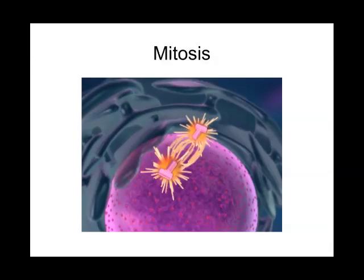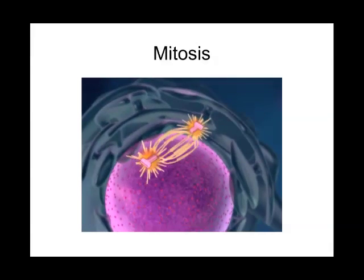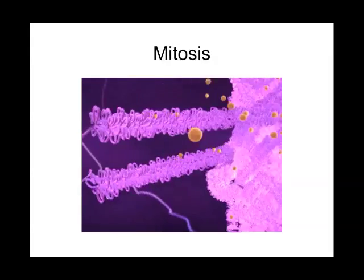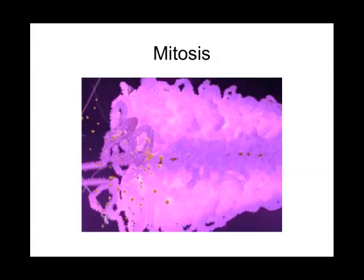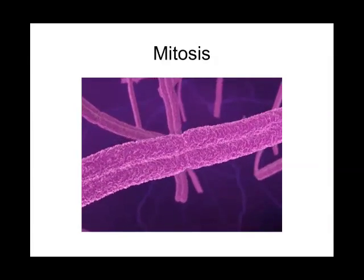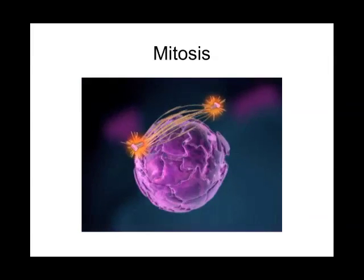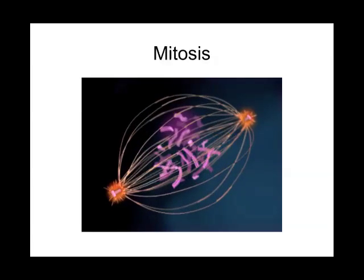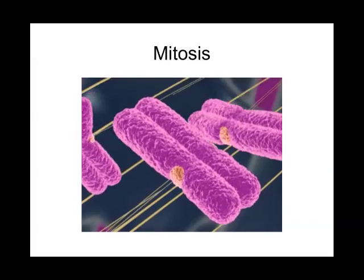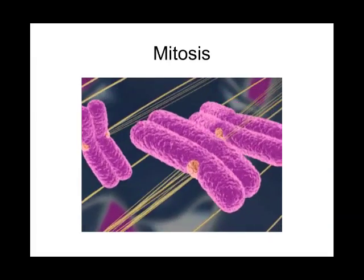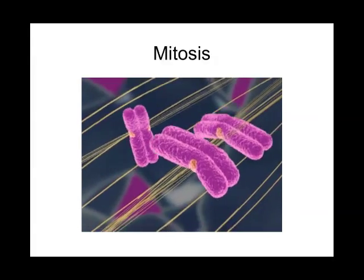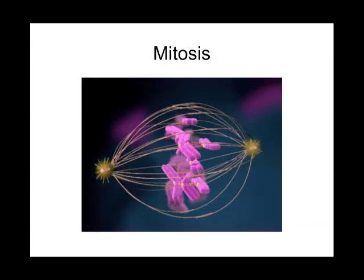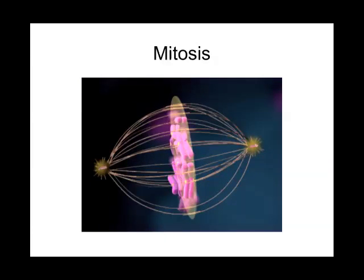Outside the nucleus, centrosomes that duplicated earlier move away from each other to opposite sides of the cell. Microtubules extend from the centrosomes, forming the mitotic spindle. Back in the nucleus, the DNA forms loops, becoming more compacted. These structures fold back on themselves, eventually condensing into a shorter and thicker chromosome consisting of two sister chromatids. As the chromosomes continue to condense, the nuclear envelope breaks up. The array of spindle microtubules is now extensive and the chromosomes are fully condensed. Spindle fibers from each pole attach to protein structures located at the centromere of each sister chromatid.